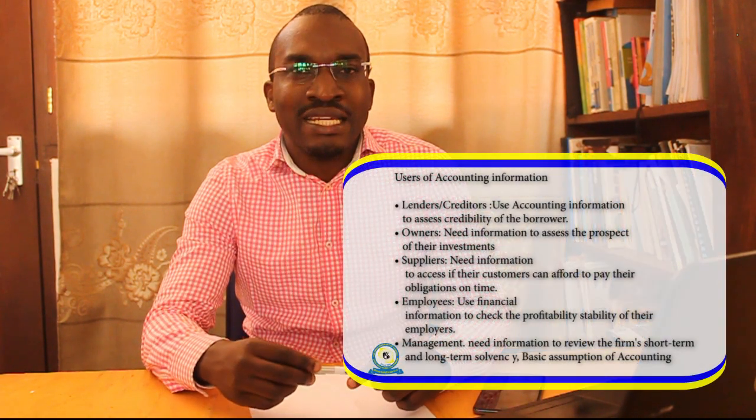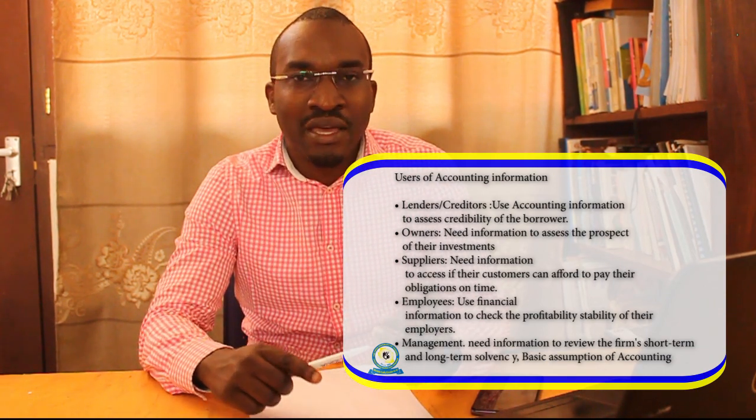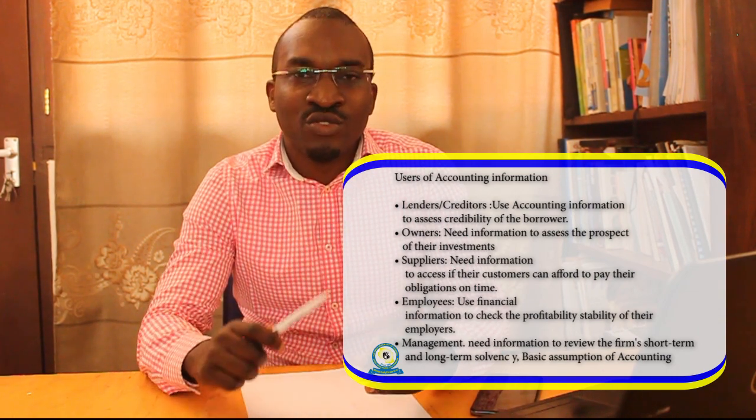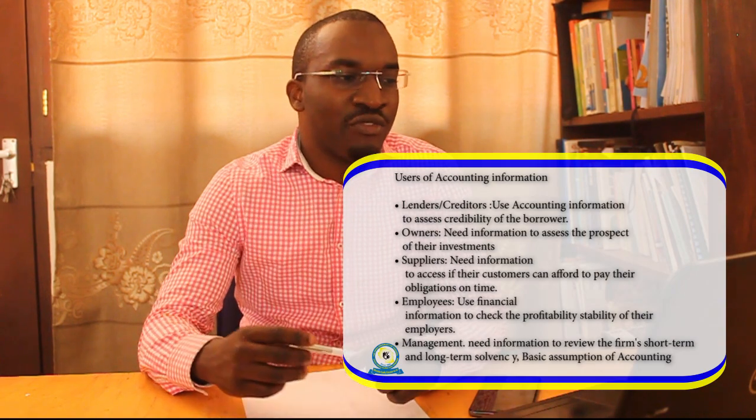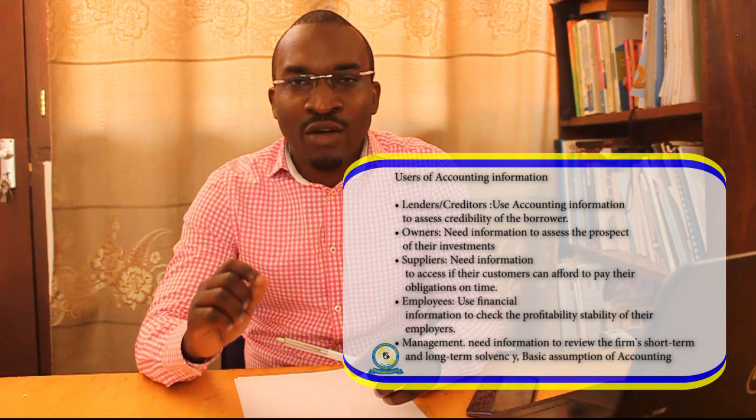From the definition of accounting, we've seen that economic information has to be communicated to different users. The question is: who are these users of financial accounting or financial information? These financial or economic activities need to be communicated to different stakeholders, including lenders or creditors, the bank, suppliers, employees, the management, and owners or investors of a business.